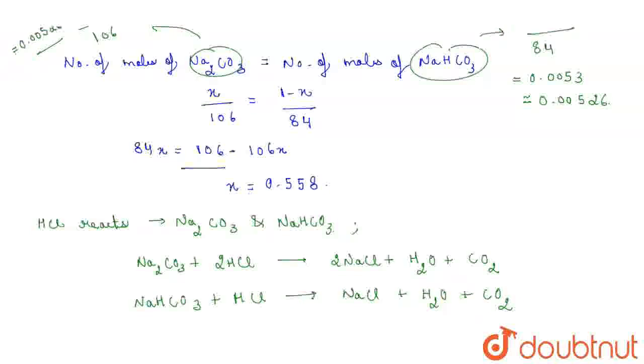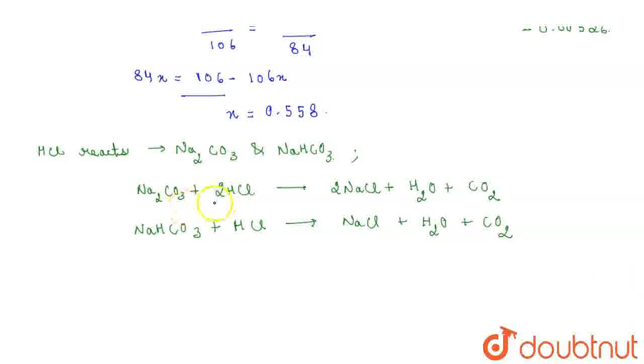Right? Now, from the first reaction, 1 mole of Na2CO3 is reacting with 2 moles of HCl. Therefore, 0.00526 mole of Na2CO3 will react with 2 into 0.00526 mole of HCl.